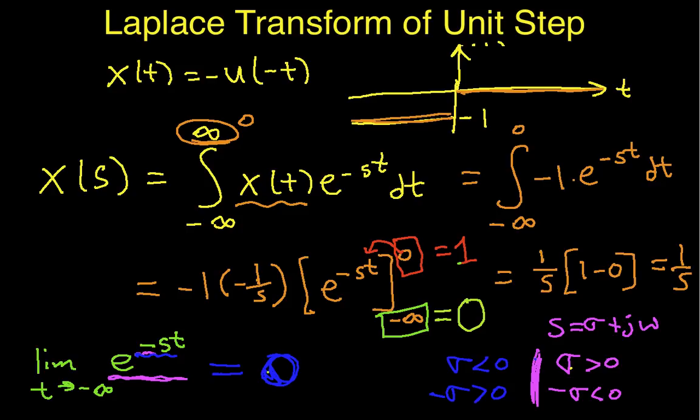The somewhat strange result is that the answer we get here is the same as the answer we got by taking the Laplace transform of the unit step function. But the thing that's different is that my condition on sigma for this limit to converge, or to go to zero, is that sigma is less than zero, where before, in part one, we required that sigma be greater than zero.